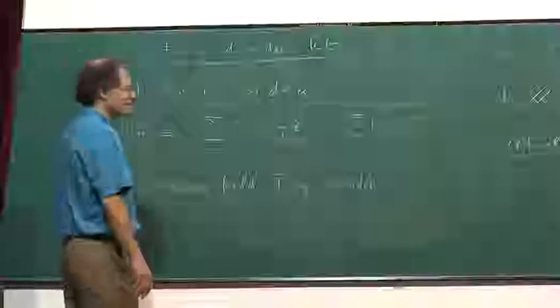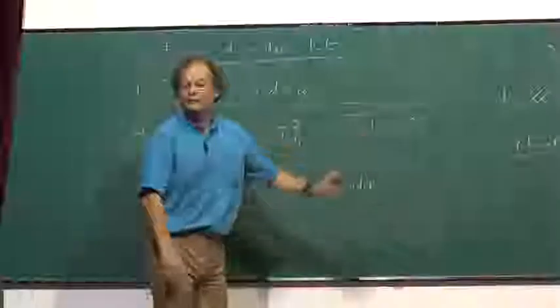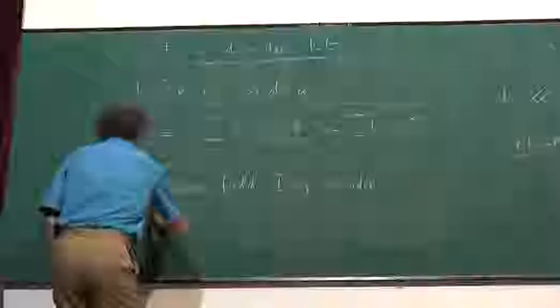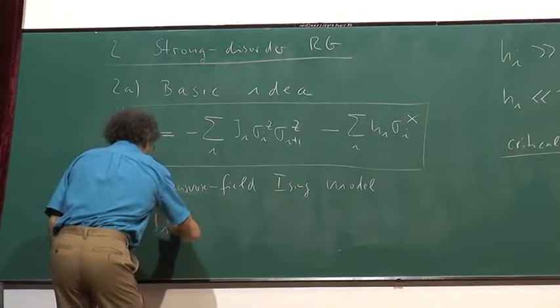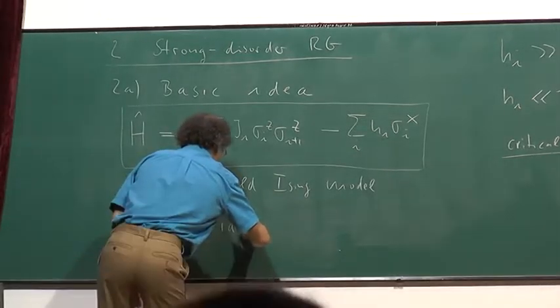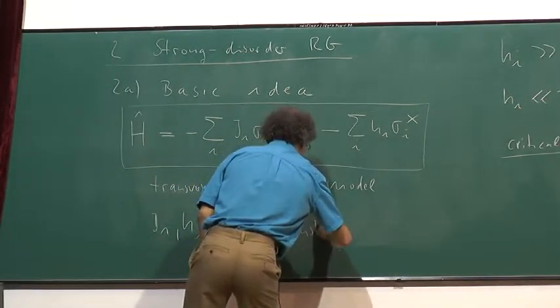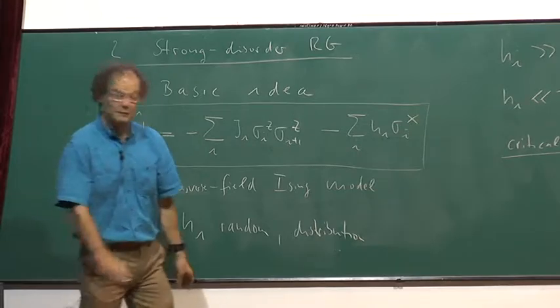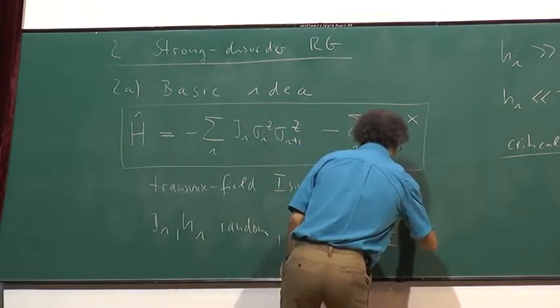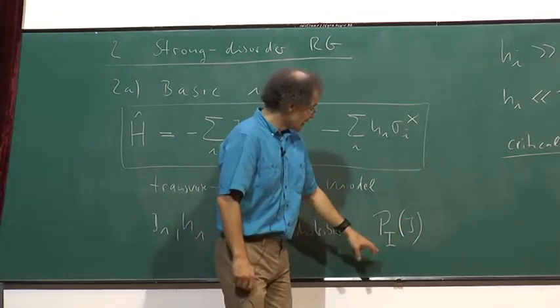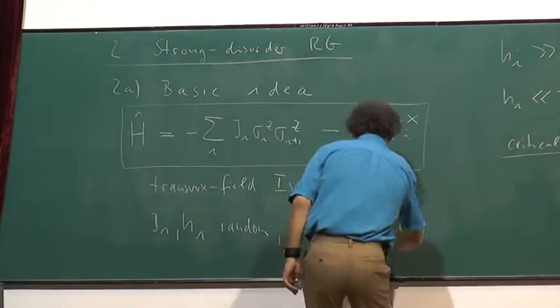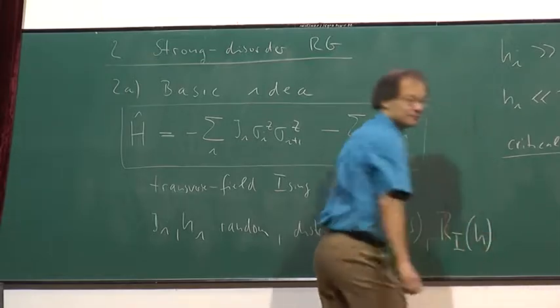To make our life simple, let's assume these are independent random variables, which we can characterize by individual distributions. There will be some distribution P of J — I give it an index 'i' for initial because this will flow later on — and another distribution R initial of H.